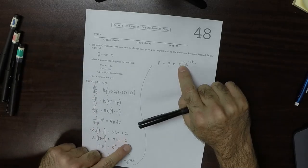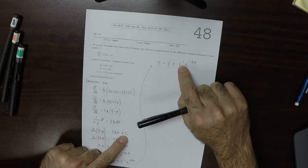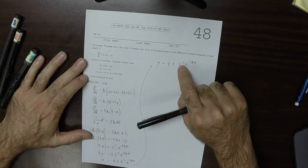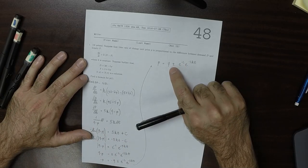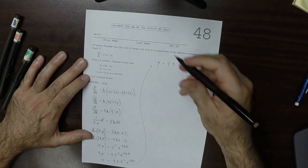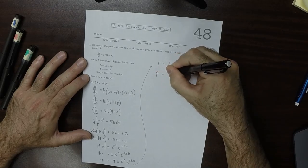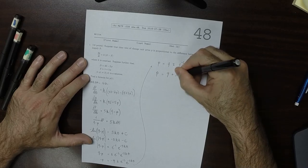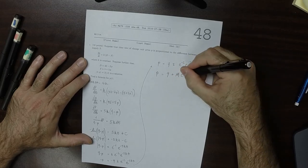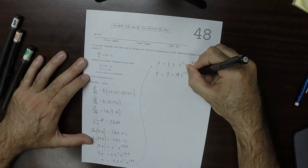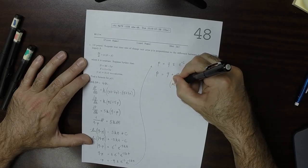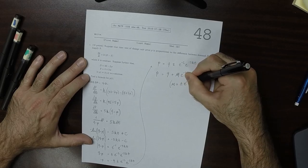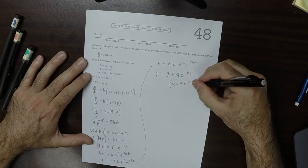So now, c was an arbitrary constant. So exponential of negative c is an arbitrary positive constant. But because we have plus or minus here, that means that is just some arbitrary constant. So plus m e to negative 5kt, because m equal to plus or minus exponential negative c is an arbitrary constant.